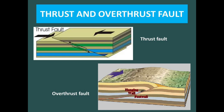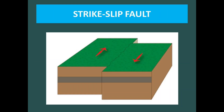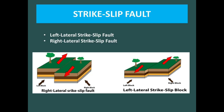The third type is strike-slip faults, which are found when two blocks slide past each other. There are two types: right lateral strike-slip fault and left lateral strike-slip fault.